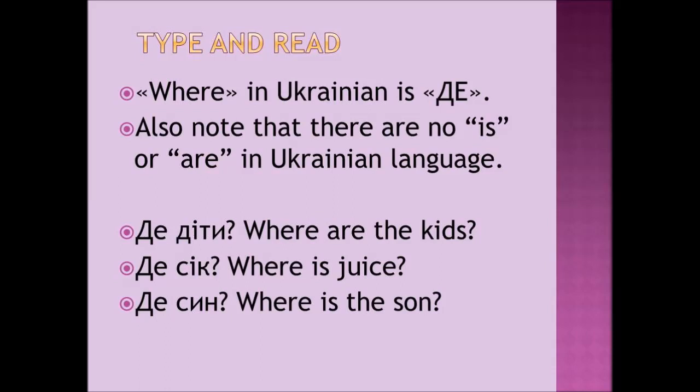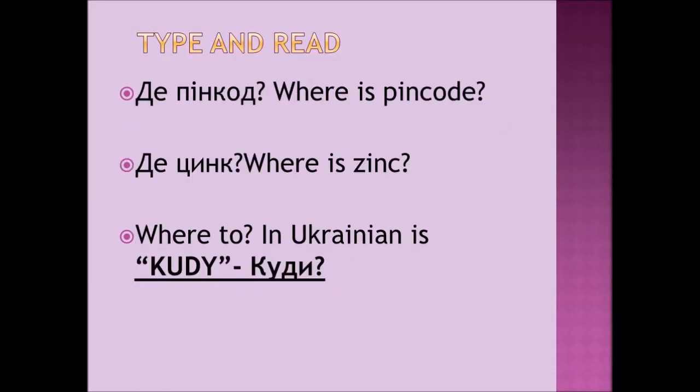The first one is 'де діти' — where are the kids? The second one is 'де сік' — where is juice? The third one is 'де сонце' — where is the sun? Let's get down to another example: 'де PIN-код' — where is the PIN code? And 'де раковина' — where is the sink?